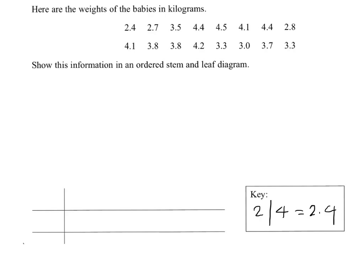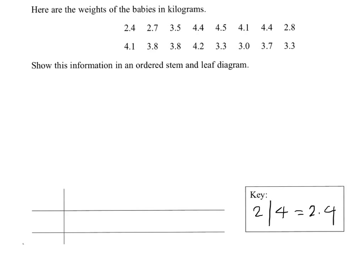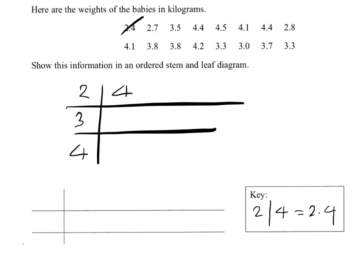Now when we do the table itself, it's sometimes sensible to do an unordered stem and leaf because it's quite difficult to do the ordered one in one go. So I'm going to do that now. So 2, 3 and 4 and then I'll just cross off as I go. So there's my 4, my 7 and my 8.